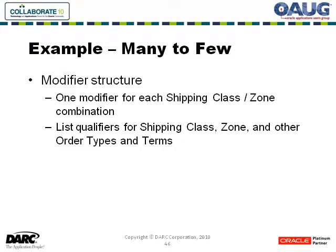The way these modifiers were structured — I'll use the worst case because it's most illustrative — there was one modifier for each shipping class and shipping zone combination. The list qualifiers would include the shipping class, the zone, and typically a bunch of other conditions representing various qualifying combinations of order types, order terms, or other conditions. Very rarely was it just shipping class and zone; usually there were other conditions as well.